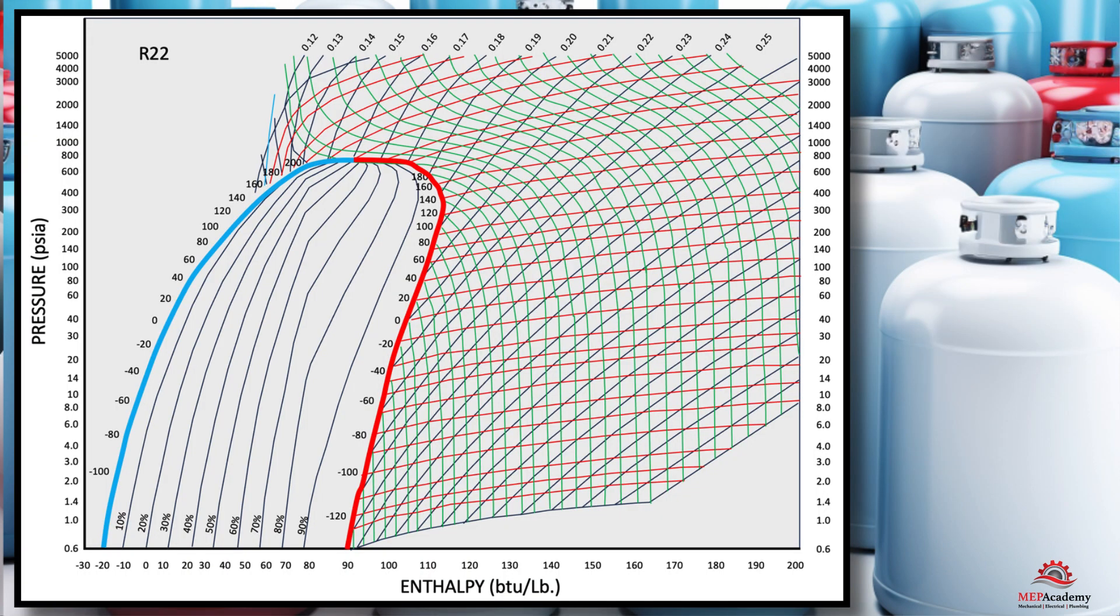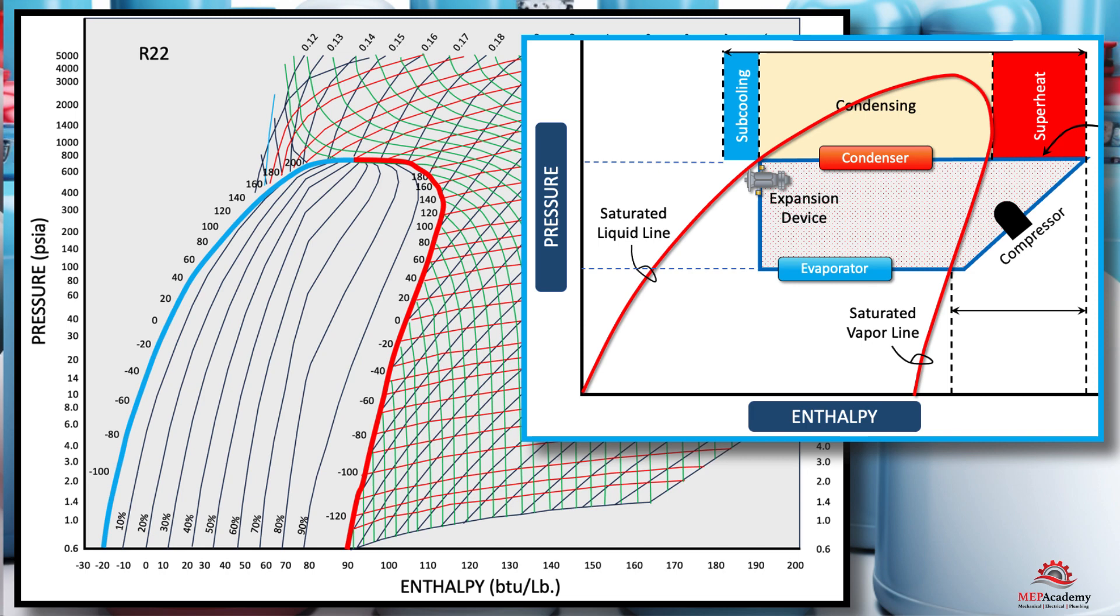Locate the pressure. Find the desired pressure on the y-axis of the chart. Trace a horizontal line from that pressure value until it intersects with the graph. If you want to use gauge pressure then add atmospheric pressure.